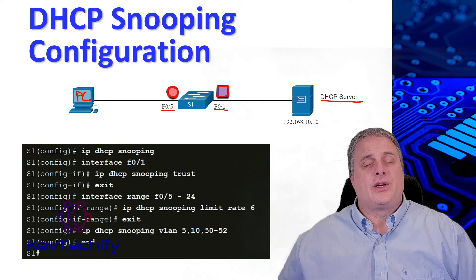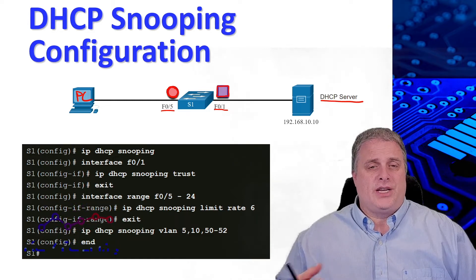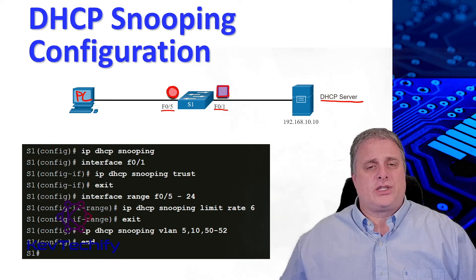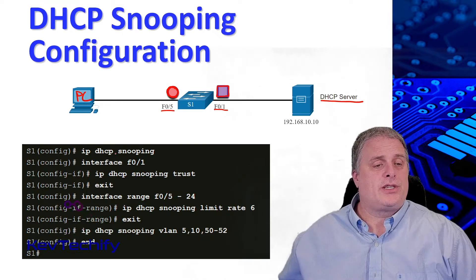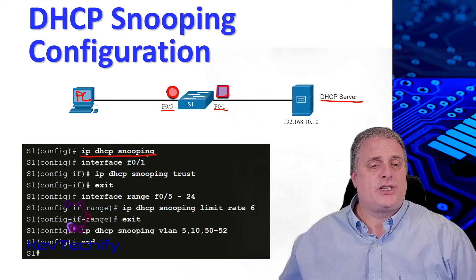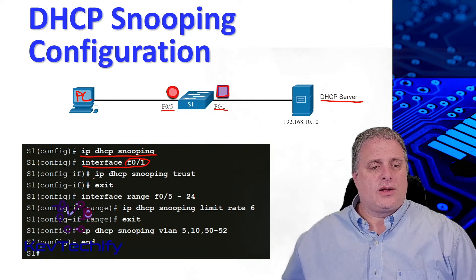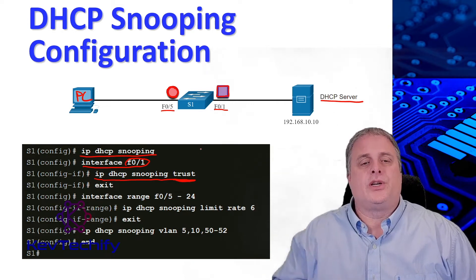Because our DHCP server is on Fa0/1, this is a trusted port, indicated by the purple square. Since we have a DHCP server, it's going to go through the DORA process — Discovery, Offer, Request, and Acknowledgement. Those messages are expected to come through Fa0/1, so we set it as a trusted port. First, turn on DHCP snooping globally in global configuration mode with IP DHCP snooping. Then go into interface Fa0/1 — that's where our DHCP server is connected — and enter IP DHCP snooping trust, trusting that the connected device is a DHCP server. You as the administrator need to configure this.